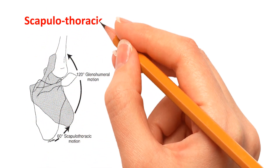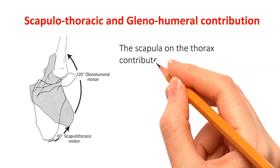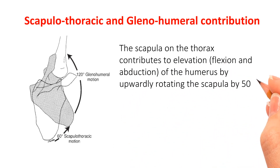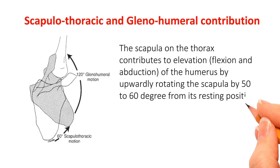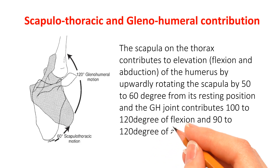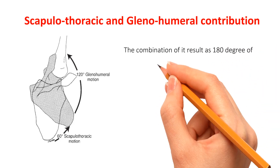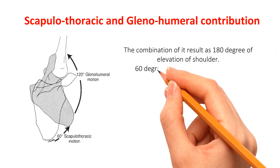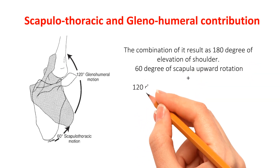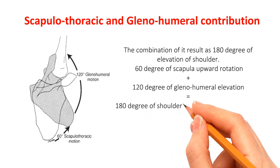First, let's learn about scapulothoracic and glenohumeral contribution. The scapula on the thorax contributes to elevation, flexion, and abduction of the humerus by upwardly rotating the scapula by 50 to 60 degrees from its resting position. The GH joint contributes 100 to 120 degrees of flexion and 90 to 120 degrees of abduction. The combination results in 180 degrees of elevation of the shoulder: 60 degrees of scapula upward rotation plus 120 degrees of glenohumeral elevation equals 180 degrees of shoulder elevation.